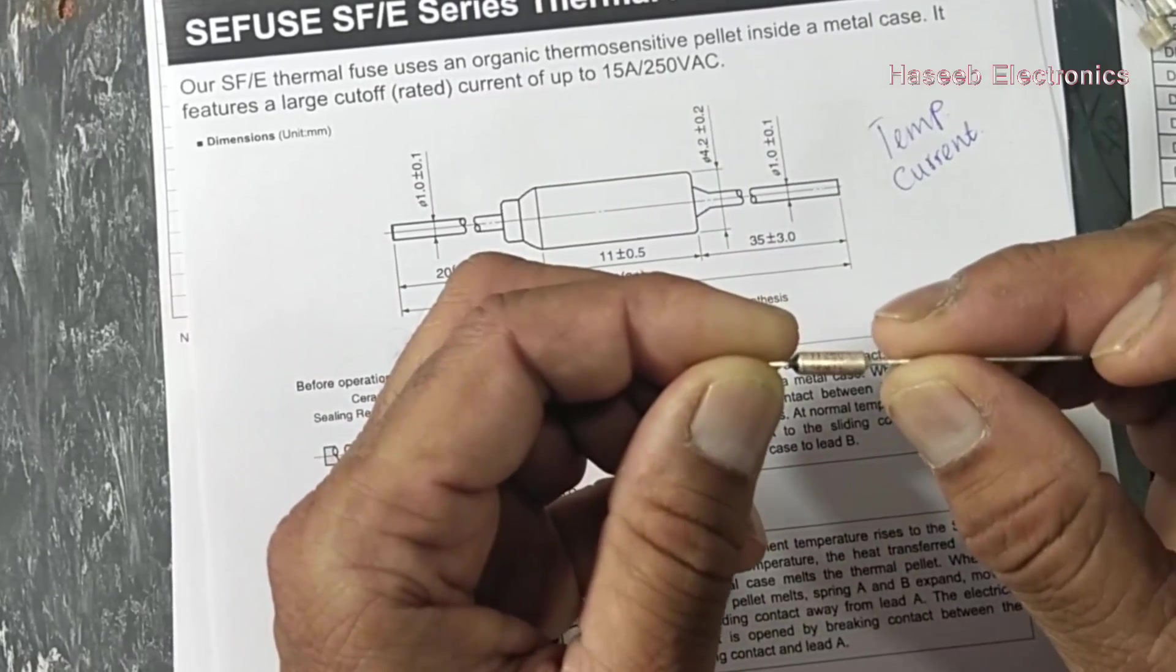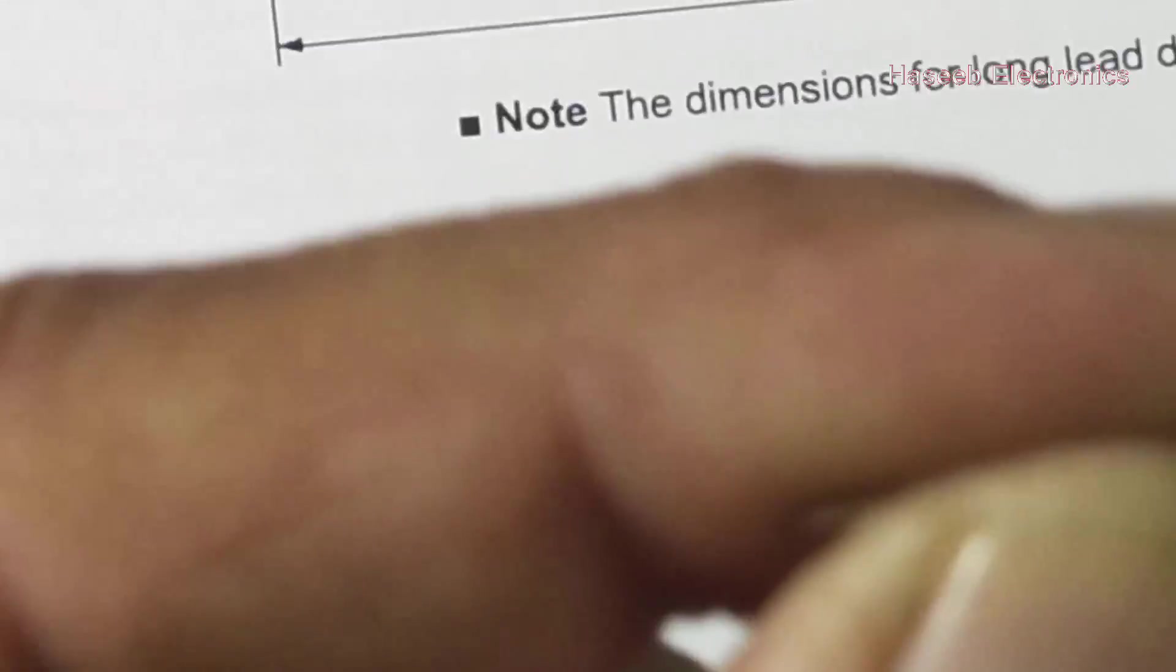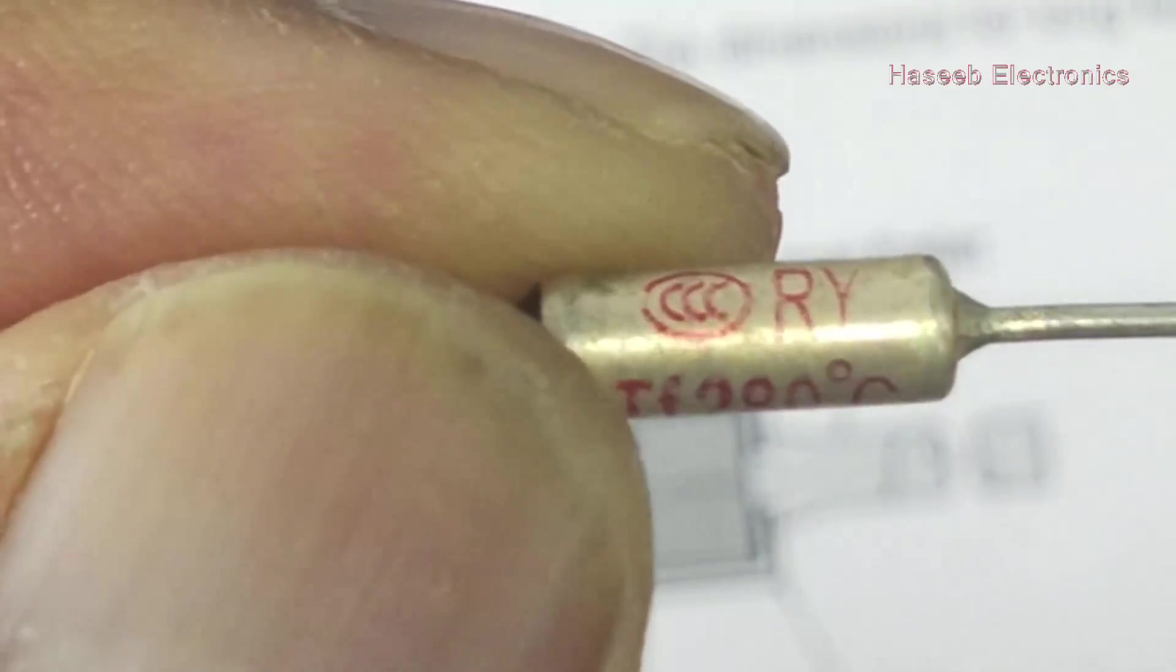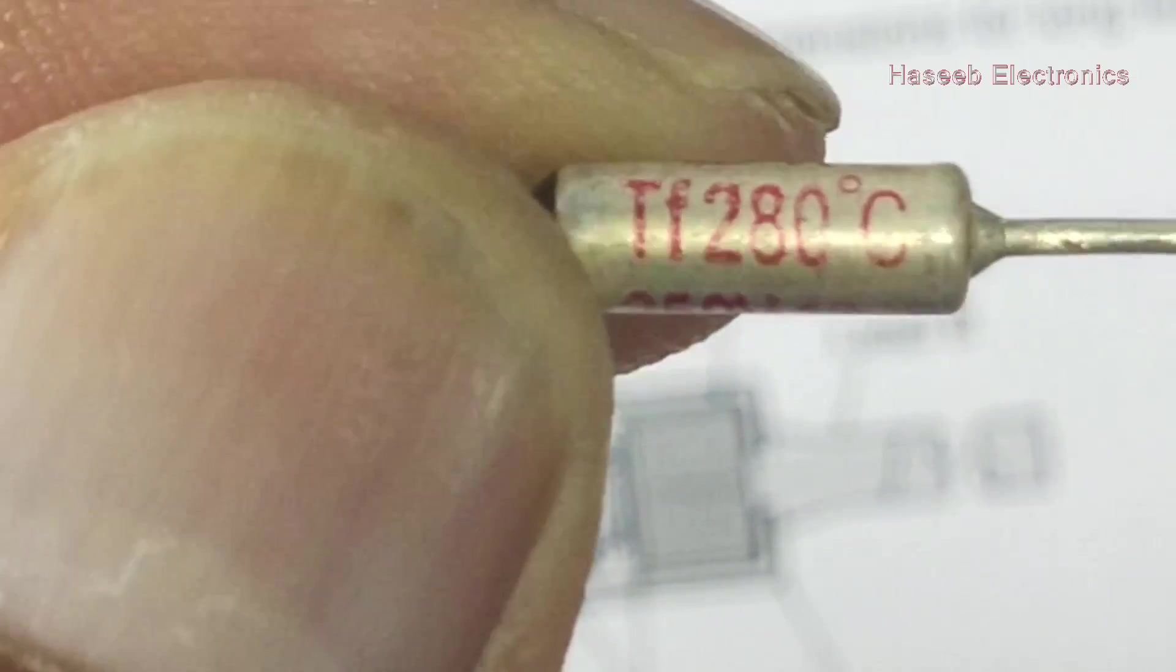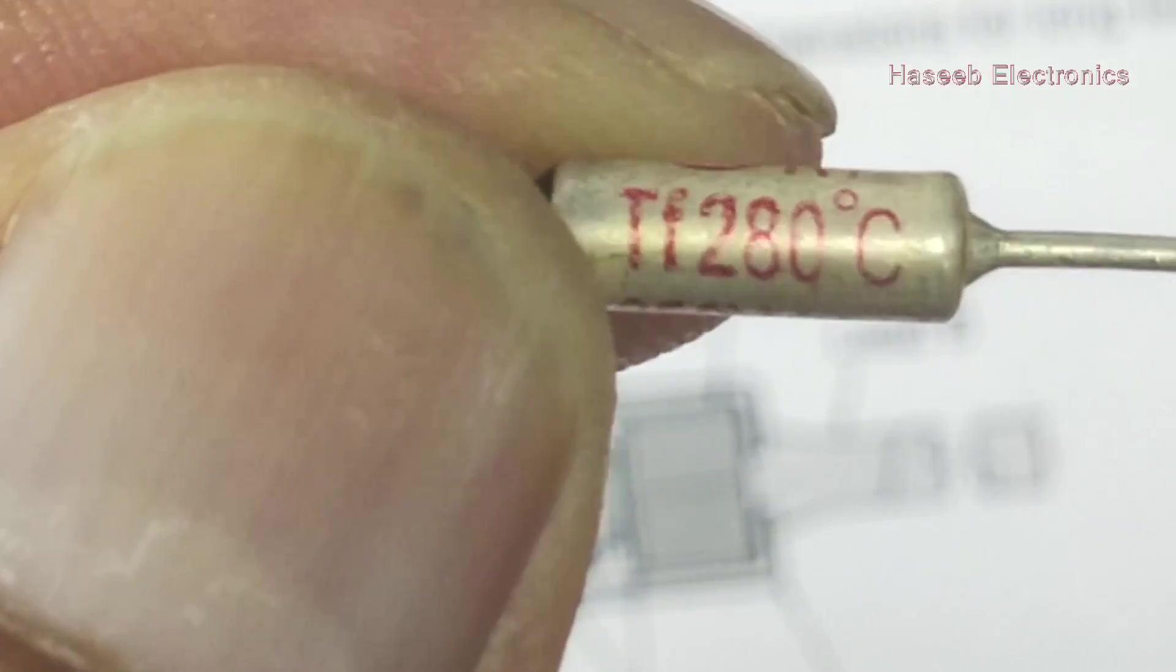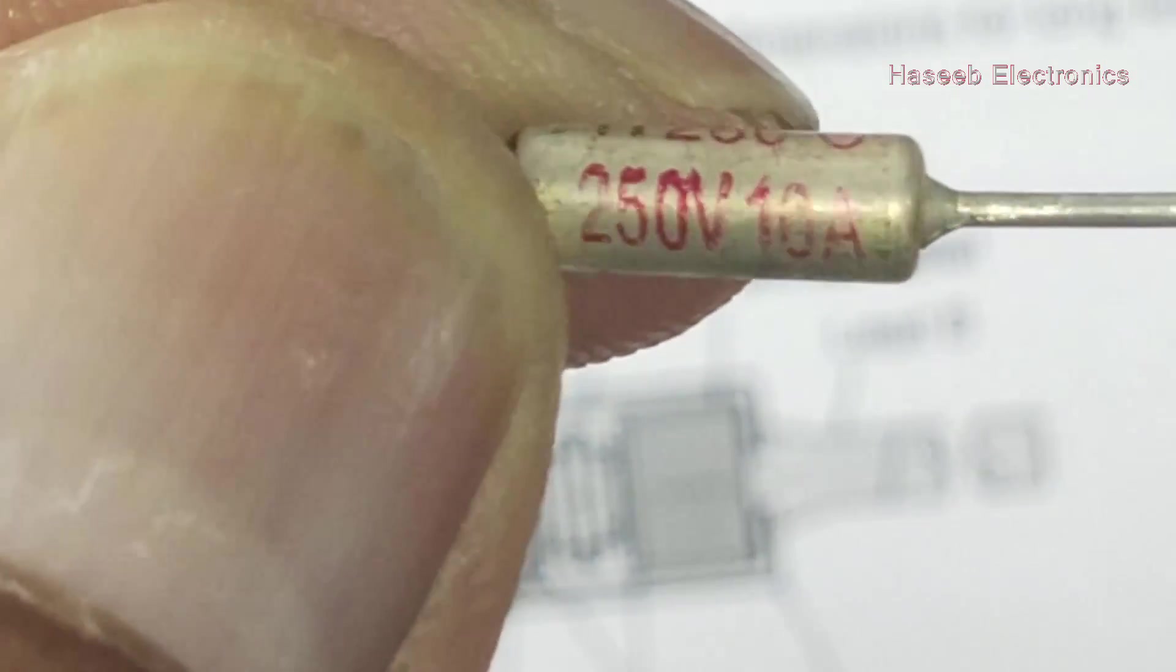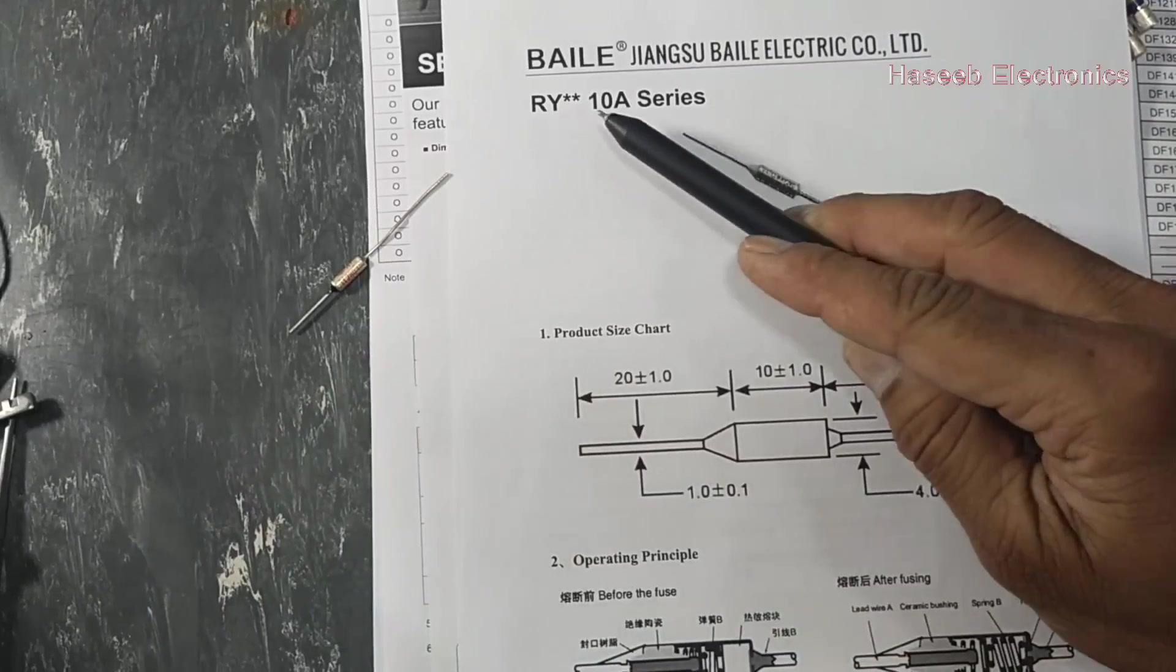It has different types of markings. First of all, RY is the brand name. Then TF - functioning temperature. There are two types of temperatures - TH and TF - but this is TF functioning temperature, 280 degree centigrade. Then there is a voltage rating and current rating. This information is available on the body.